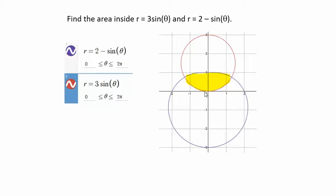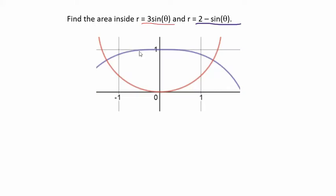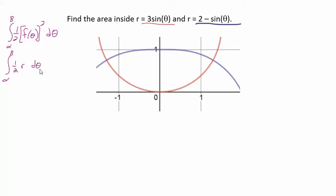To think about how to set up this integral, we need to visualize what's happening. Remember, when finding areas using polar equations and integrals, you've got the formula: the integral from alpha to beta of one half r squared d theta, where r has to be written as a function of theta. We got this formula by cutting into sectors. Hopefully you've had some experience deriving that formula because you need to understand it to set up your area integral. This is the entire area we want to find.